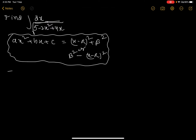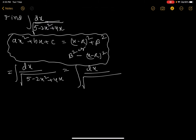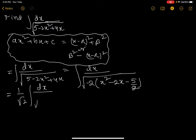Take the integration of dx by root over 5 minus 2x square plus 4x. Take out minus 2 as the common factor, giving dx by root over minus 2 times (x square minus 2x minus 5 by 2). Then take 1 by root 2 outside, leaving root over minus x square minus 2x minus 5 by 2. This changes the problem into a manageable form.